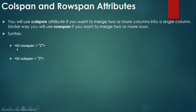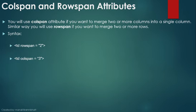These attributes are used with the TD tag. You have to decide where you want to apply the merging and with which cell. For example, TD rowspan="2" means you want to merge two rows, and TD colspan="3" means you want to merge three columns into one cell. In one case it's one cell spanning two rows, and in the next example one cell spanning three columns.